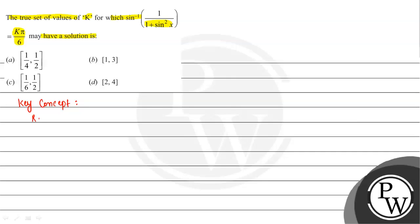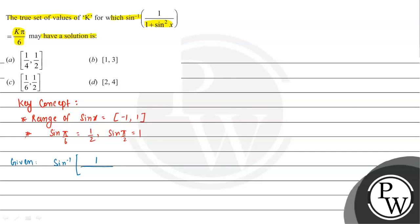The range of sin x is from minus 1 to 1. We also use sin(5π/6) equals 1/2 and sin(π/2) equals 1. So looking at the given question: sin inverse of 1 divided by (1 plus sin squared x) is equal to k times pi by 6. We need to find the value of k.